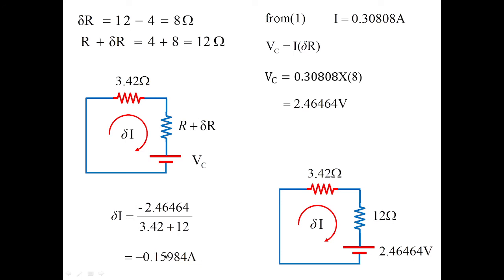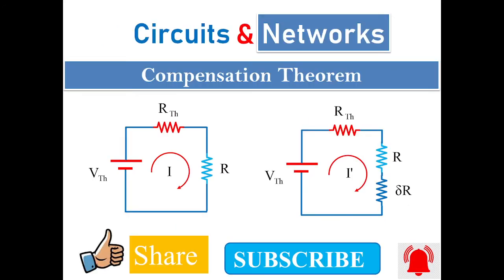This is the same value of current we got when we calculated delta I from the first two cases. This is how we verify the Compensation Theorem. If you have any doubts, please post your questions with examples and I will solve them in future sessions. Thanks for watching my video. Have a good day.